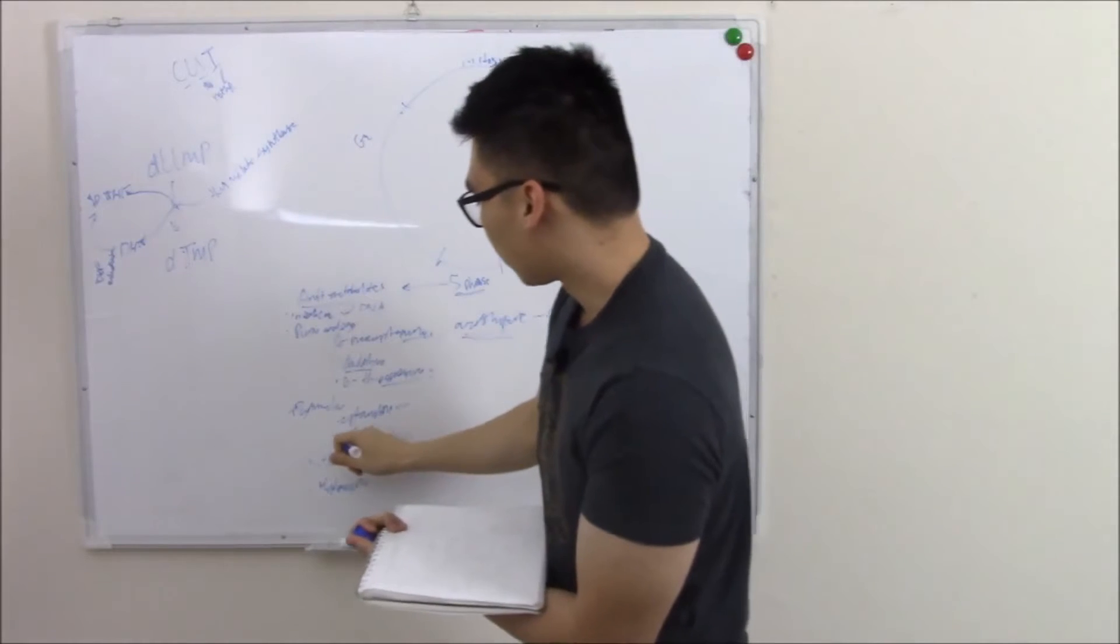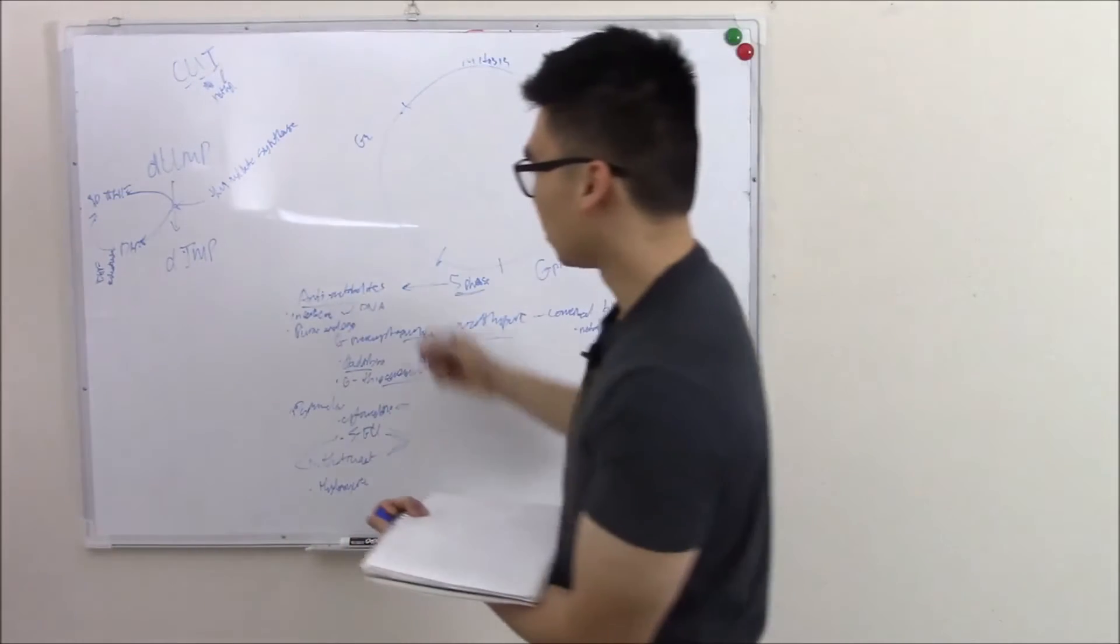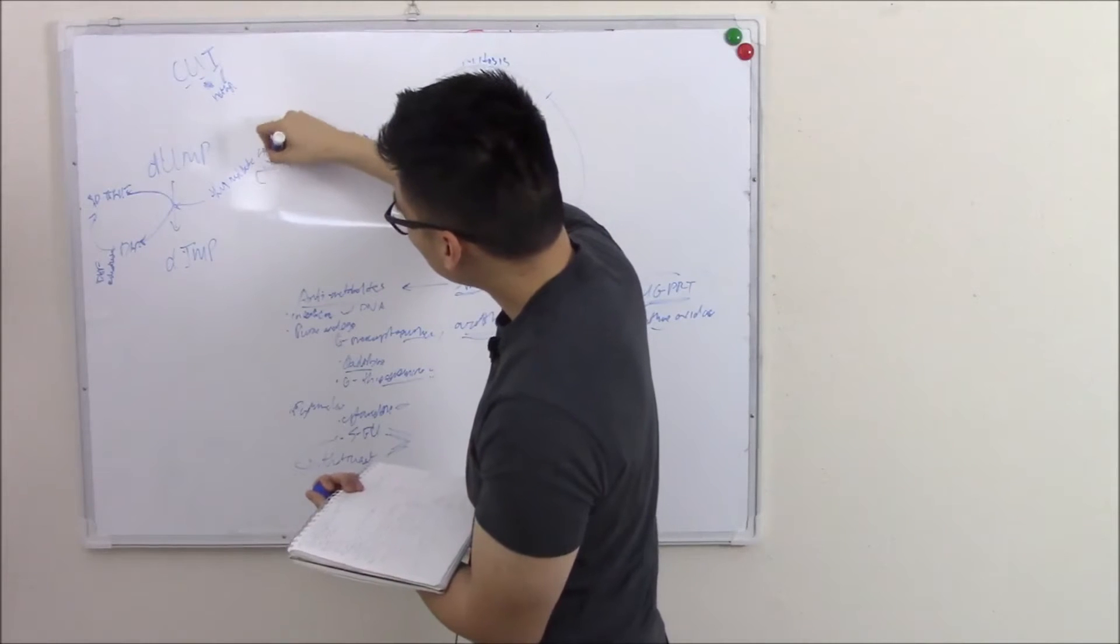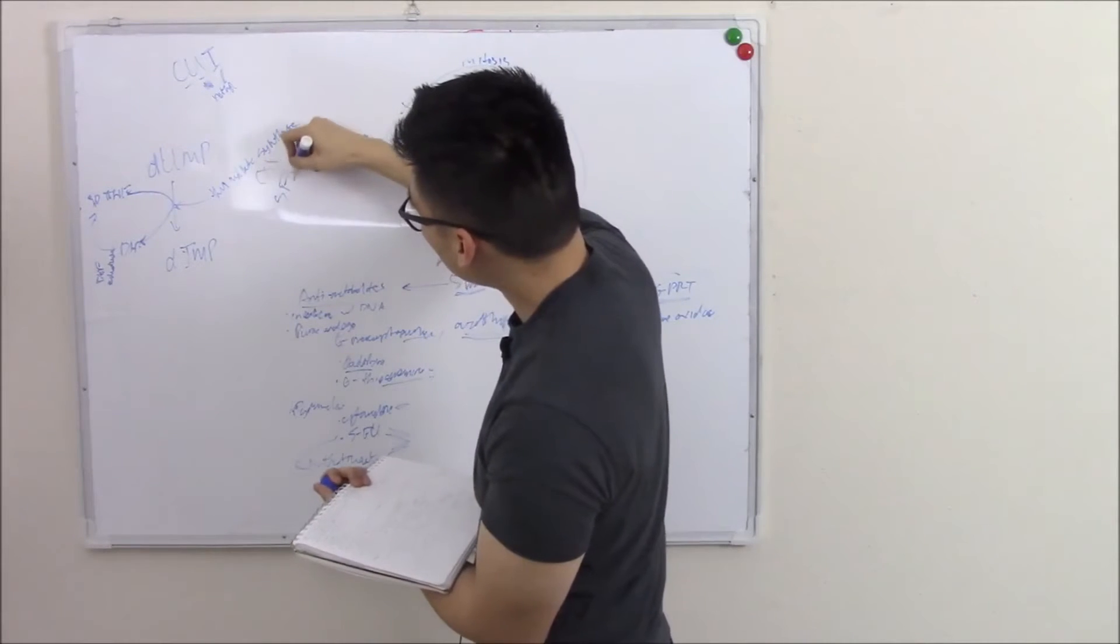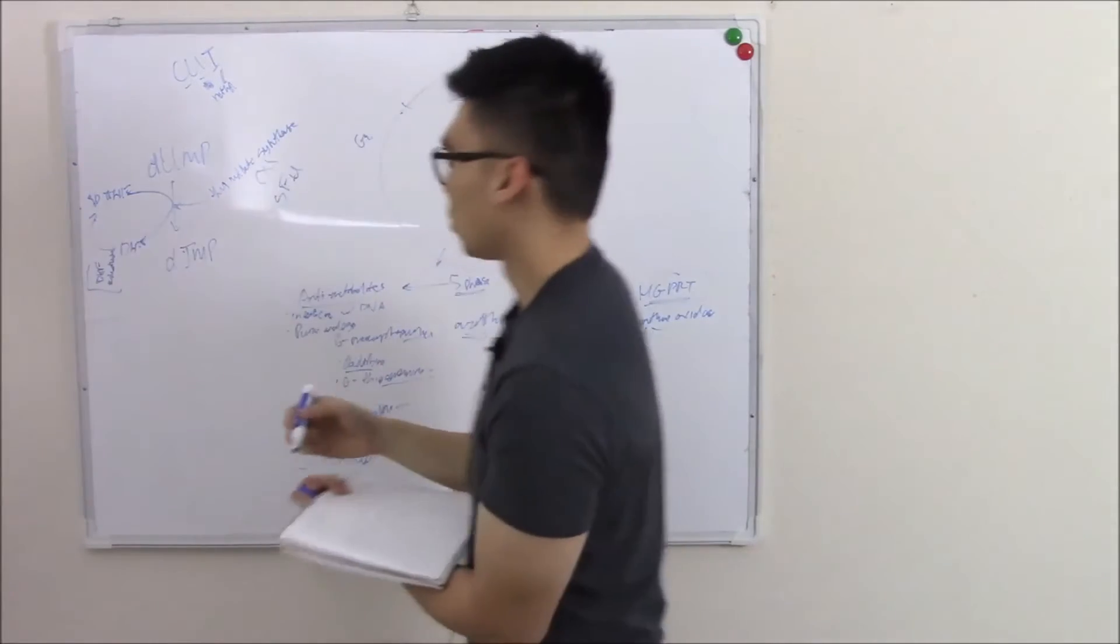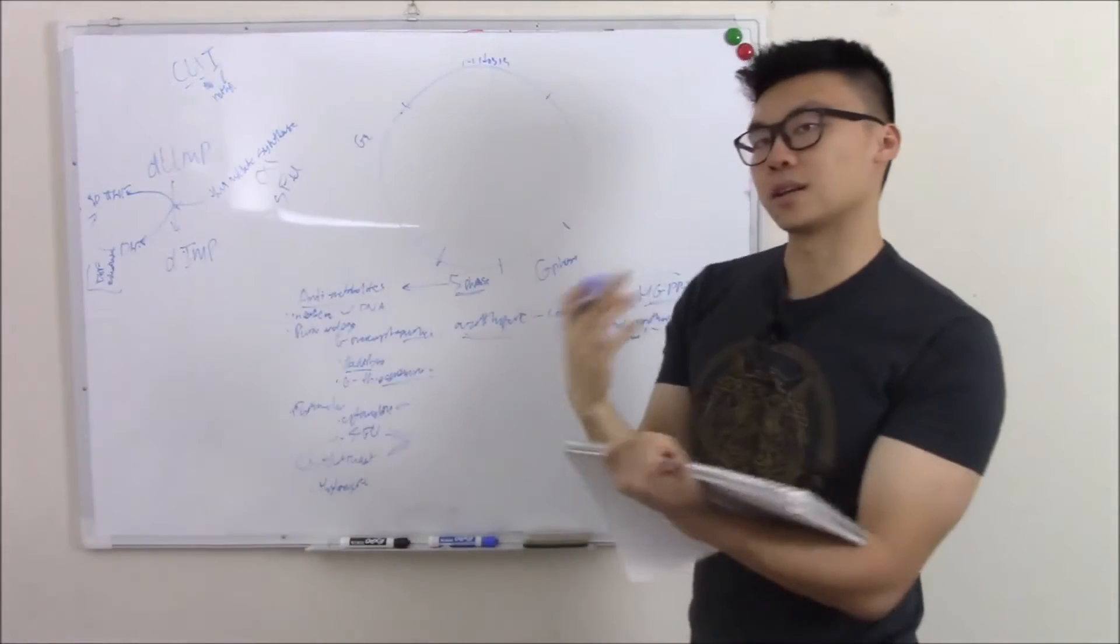That's kind of our pathway to making pyrimidines. Now where does 5-FU and methotrexate come in play? 5-FU blocks thymidylate synthase. Methotrexate blocks dihydrofolate reductase. So they work in synergy.